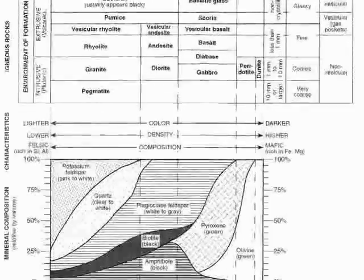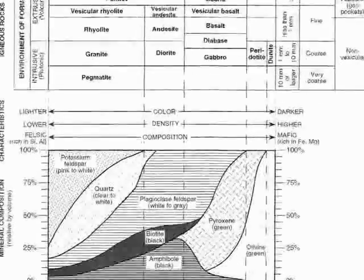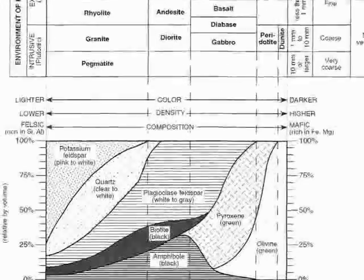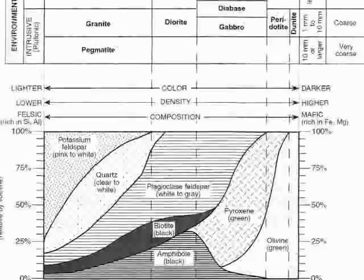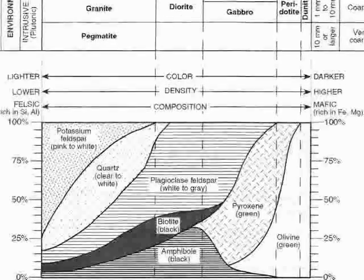As you move from left to right, the color gets darker, the density gets higher, and the composition goes from felsic to mafic. Have your teacher show you how to use the bottom half of the table to learn about the mineral composition of igneous rocks. Let's go find some igneous rock and use the reference tables to identify them.